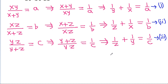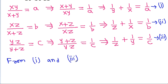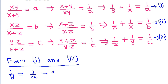From equation 1 and equation 3: from equation 1, we can get 1 by y is equal to 1 by a minus 1 by x. And from equation 3, we can get 1 by y is equal to 1 by c minus 1 by z.